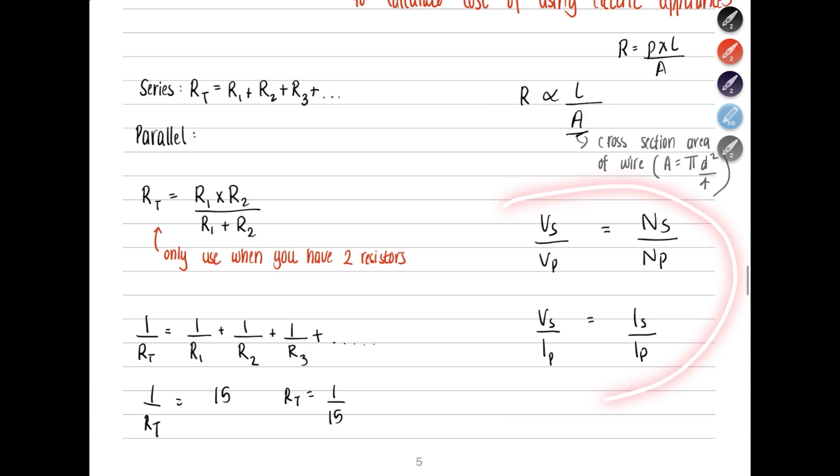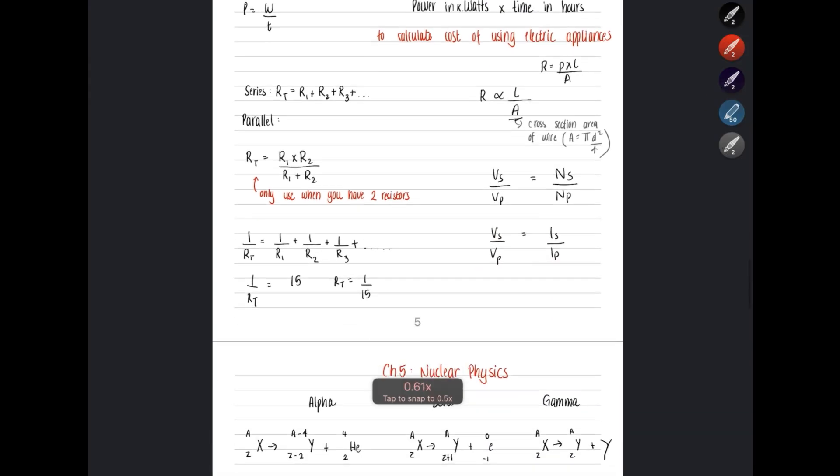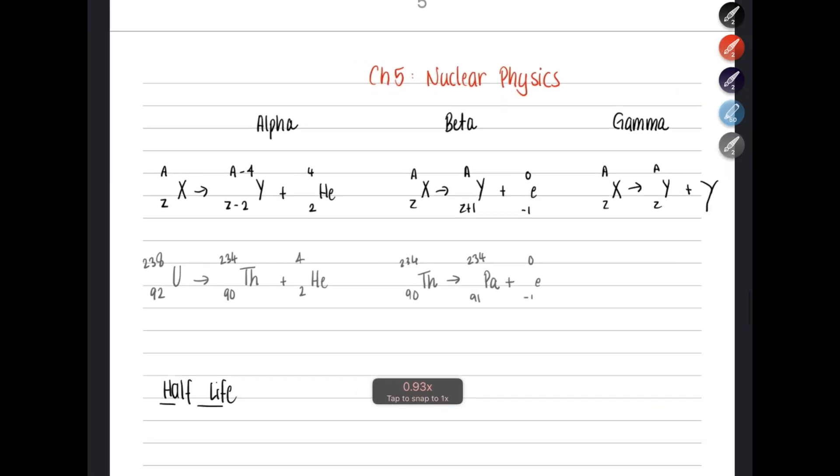Then, you have transformers. In transformers, remember, the voltage in secondary divided by voltage in primary equals the number of turns in secondary over number of turns in primary. You can use this to find the unknown value. If you have current, voltage in secondary divided by voltage in primary equals current in secondary over current in primary.